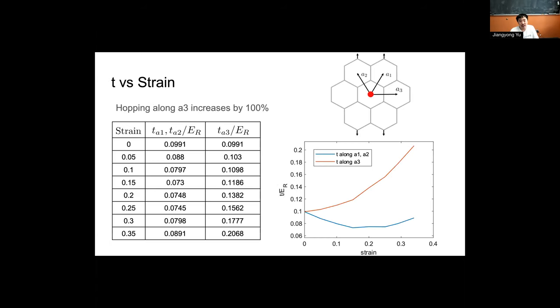What do we see when we increase strain? First of all, at zero strain, we see that essentially the hopping to all the nearest sites are the same, which makes sense because the potential is the same. However,